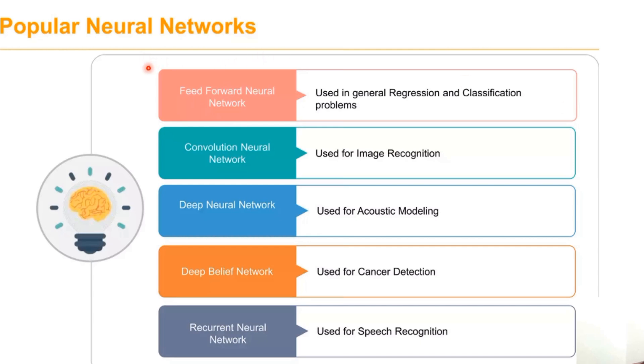The most popular networks we use are feed-forward networks, convolutional neural networks, deep neural networks, deep belief networks, and recurrent neural networks. They're mainly used for recognizing speech concepts.